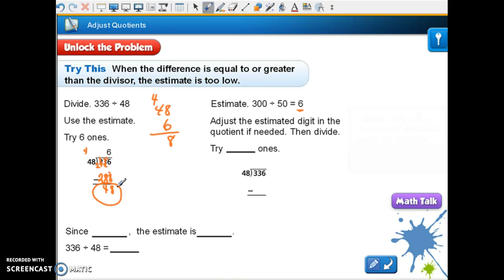Very good, it's the same as my divisor, so that's not going to work, is it? So we're going to add one. Okay, so we're going to now try a 7. And 7 times 8 is 56, regroup the 5. 7 times 4 is 28 plus 5 is 33. And when I subtract I get 0.